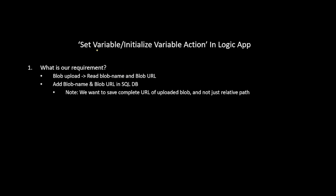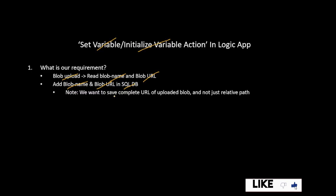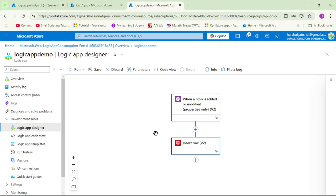In this video, let's use the set variable or initialize variable action in Logic App. Our requirement is: when a blob is uploaded, we want to read the blob name and blob URL, save them in SQL DB, and we want to save the complete URL of the uploaded blob — not just a relative path.